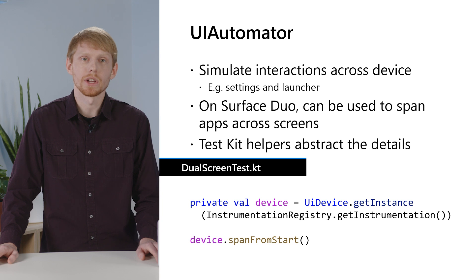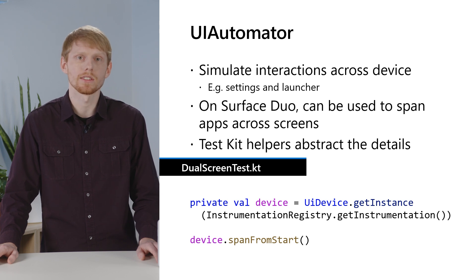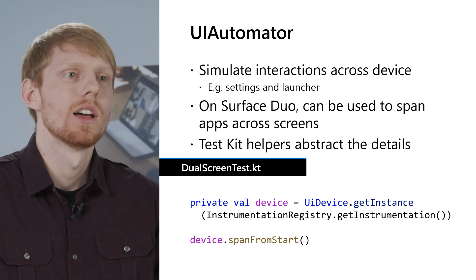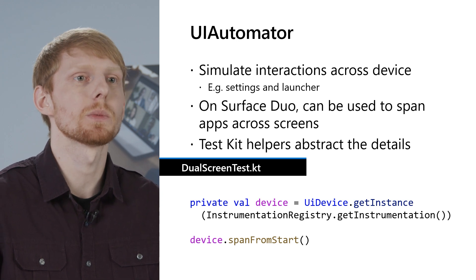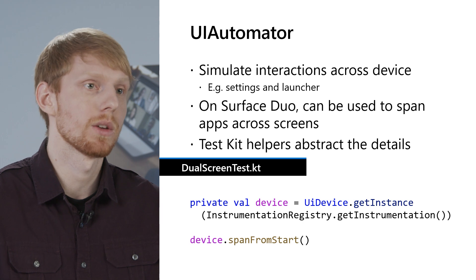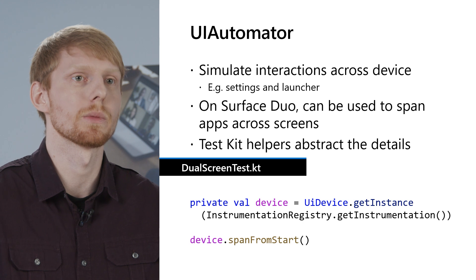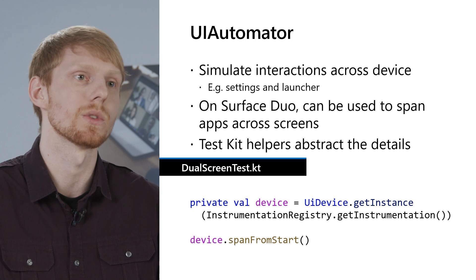UI Automator is for driving things outside of the application being tested. Examples include navigating through the launcher, interacting with the settings app, or for Surface Duo, dragging the app handle to span it across both screens — actions that the Espresso or Jetpack Compose test frameworks can't accomplish. Rather than deal with UI Automator directly, the Surface Duo team has wrapped useful functions into the Surface Duo test kit. You can use the UI device class to perform actions like spanning or unspanning an application between one and two screens, as this code snippet shows.